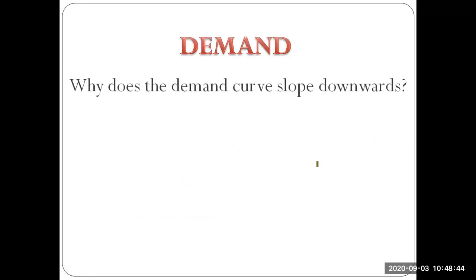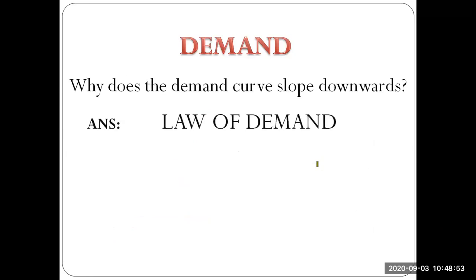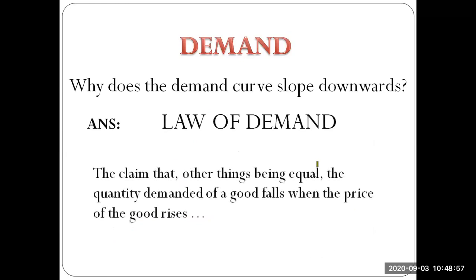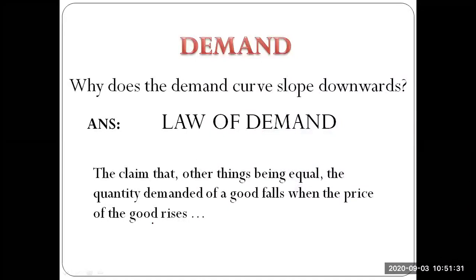Why does the demand curve slope downwards? The answer is the law of demand. The law of demand claims that, other things being equal, the quantity demanded of a good falls when the price of that good rises. When the price of a good falls, you essentially have more real income — more purchasing power — and you buy more of that good because it gives you utility, satisfaction, and fulfills your needs. That is what we mean by the law of demand.